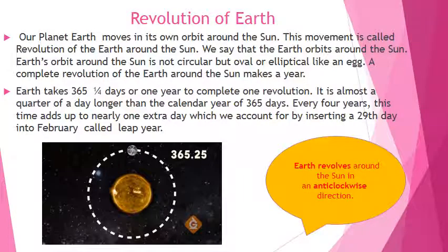Revolution of Earth. Our planet Earth moves in its own orbit around the sun. This movement is called revolution of the Earth around the sun. We say that the Earth orbits around the sun.